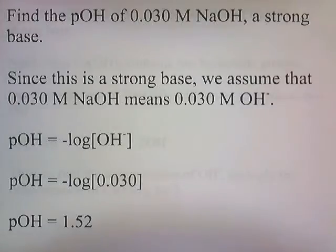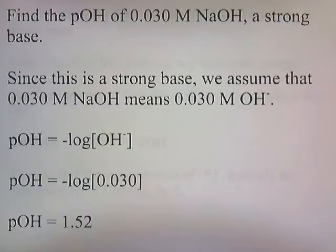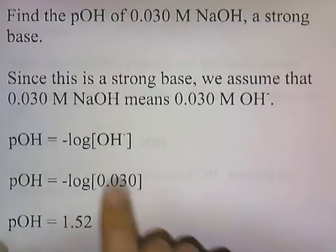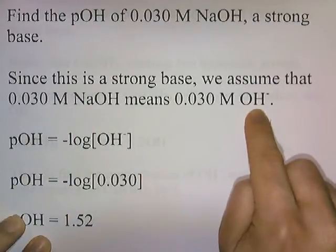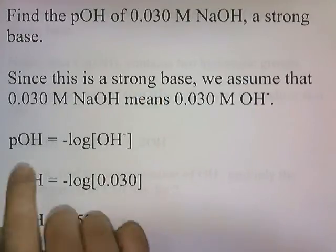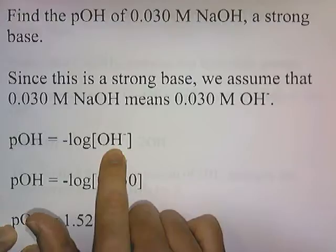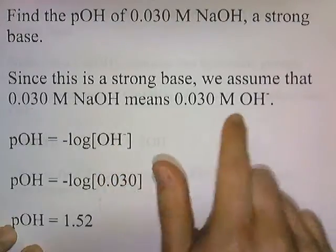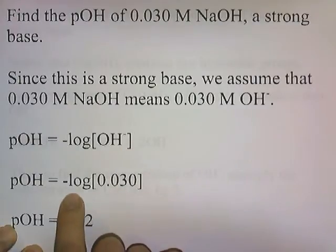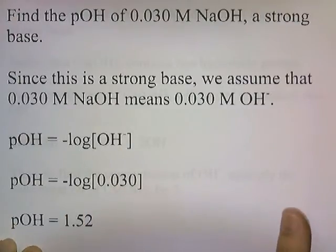Let's do a strong base. Find the pOH of a 0.030 molar NaOH, a strong base. Since this is a strong base, we assume that 0.030 molar sodium hydroxide means 0.030 molar hydroxide. The concentration of the base is the same as the concentration of the hydroxide for a strong base. pOH is negative log of the concentration of hydroxide. The concentration of hydroxide is 0.030, and the negative log of this number gives us 1.52.